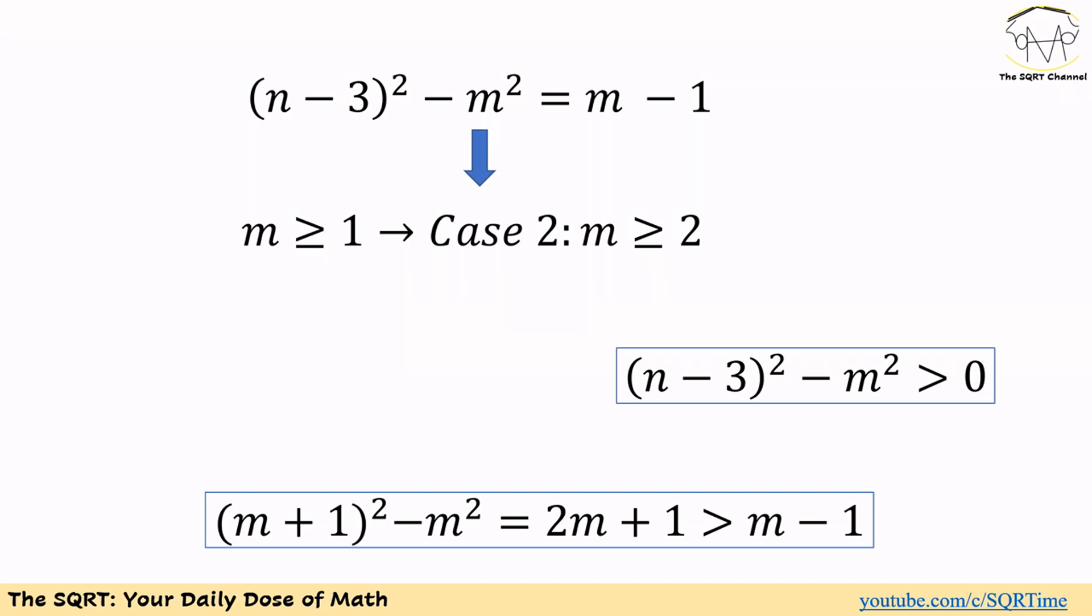Now we have n minus 3 to the power of 2 minus m squared. The minimum possible value that we can have for n minus 3 is going to be m plus 1. Since the whole expression needs to be positive, let's try m plus 1 for n minus 3. If we do it then m plus 1 to the power of 2 minus m squared is going to be 2m plus 1.